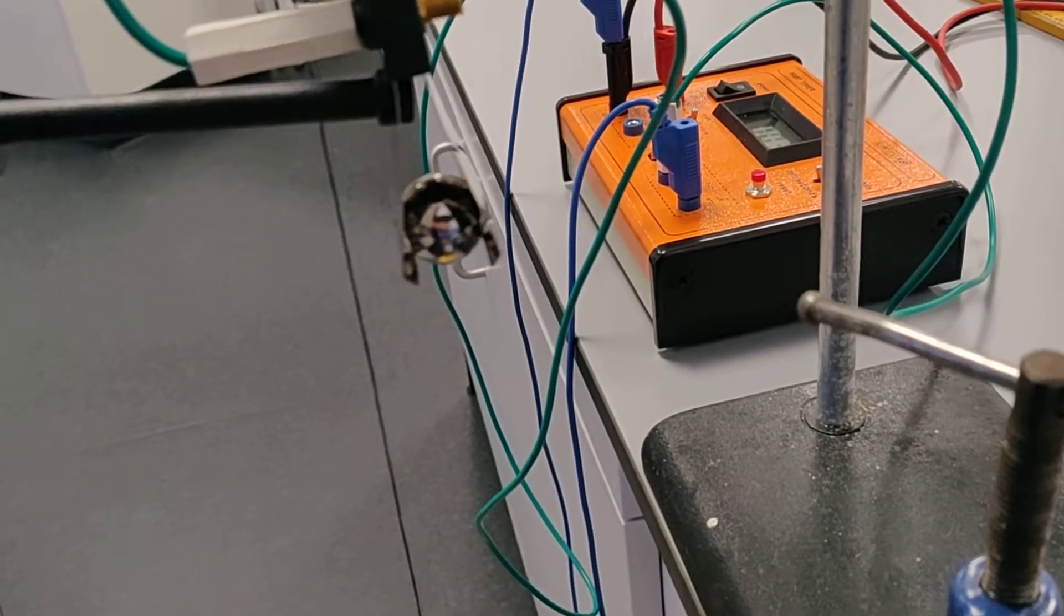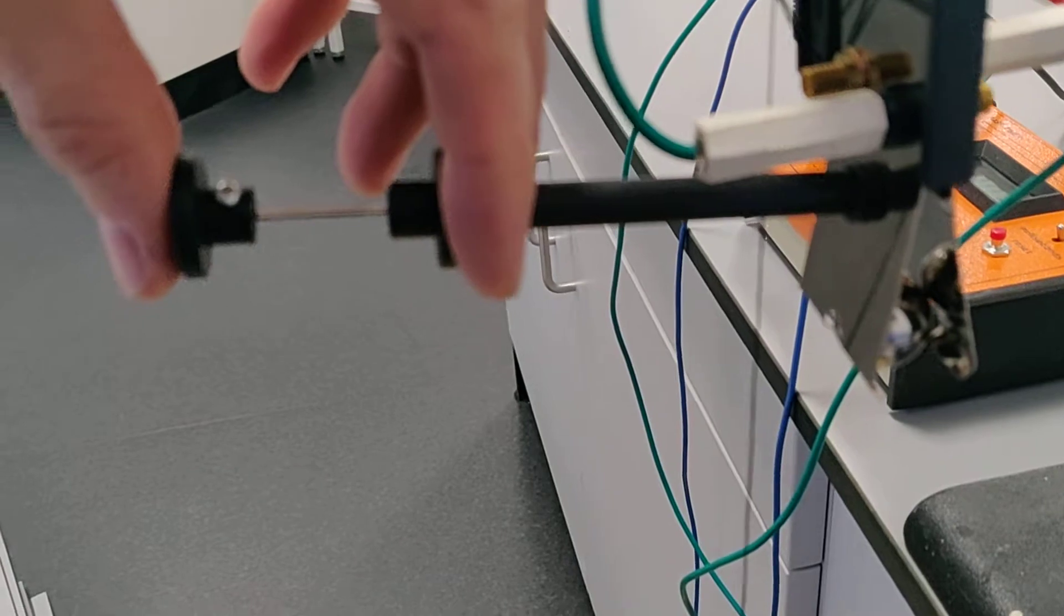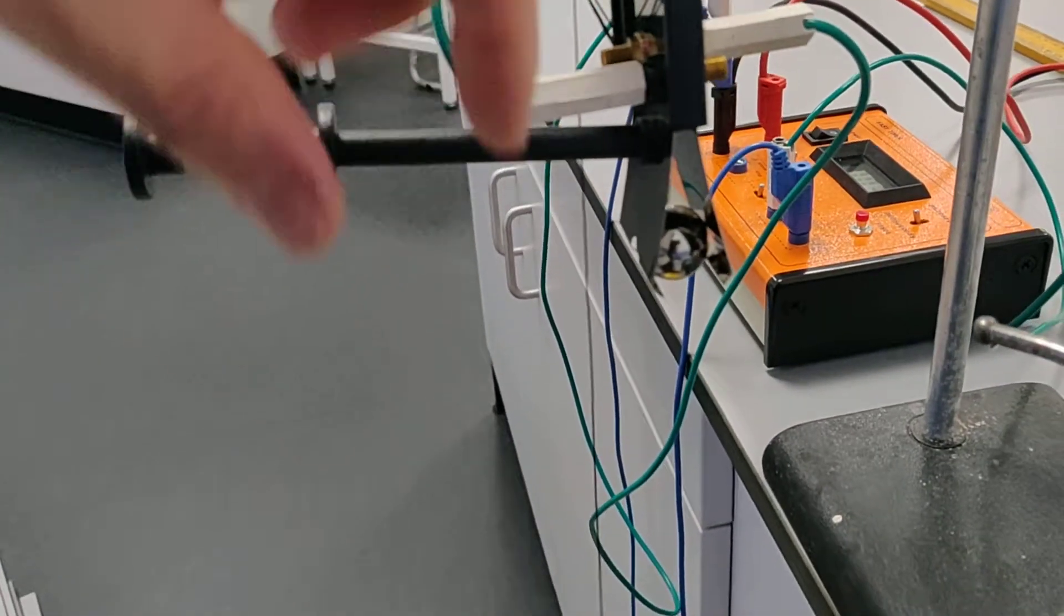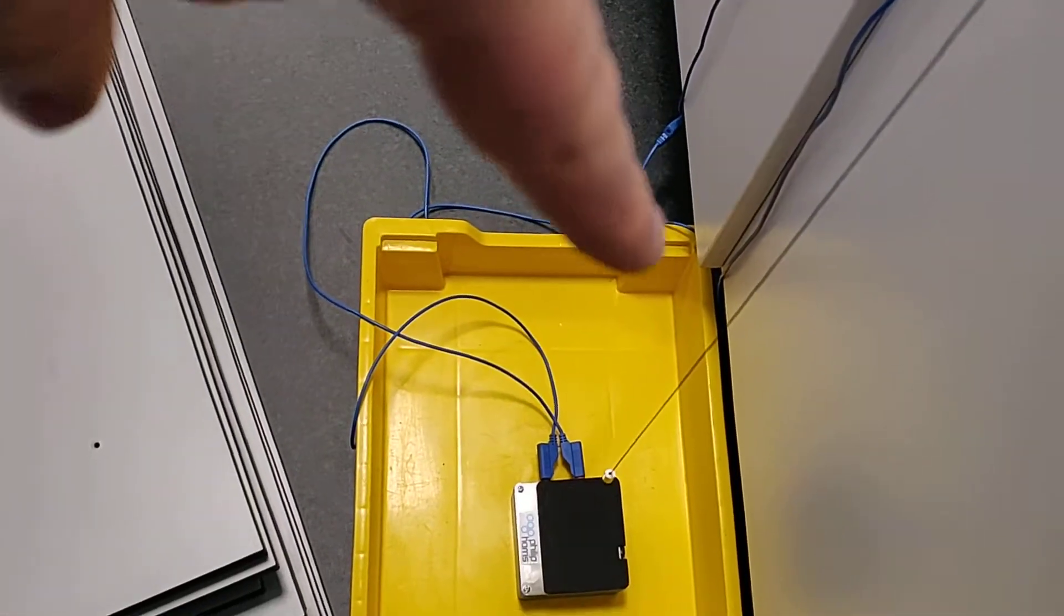And what the timer can do is it can detect when you push this plunger firmly in. It can detect when that circuit is broken. It starts the timer. The ball then falls straight down and hits a pressure sensor down there.